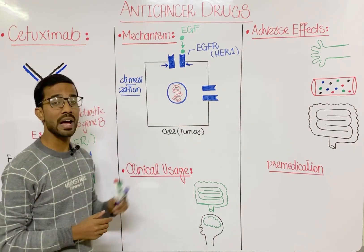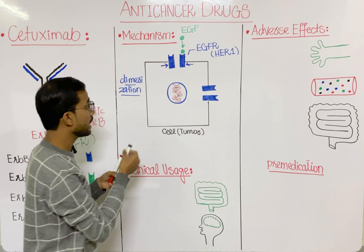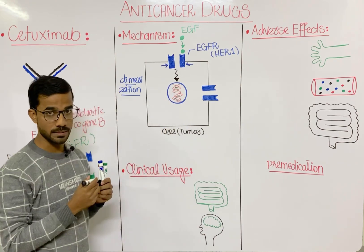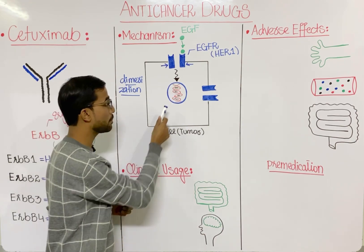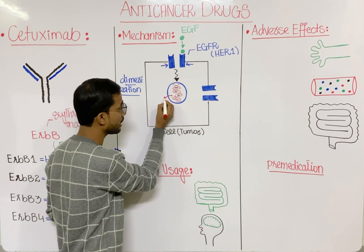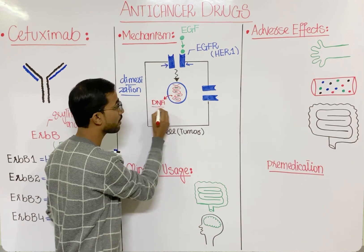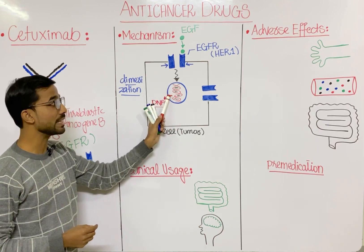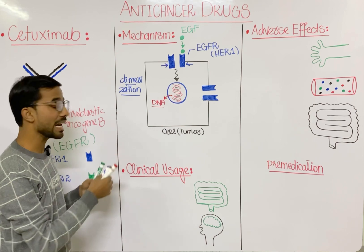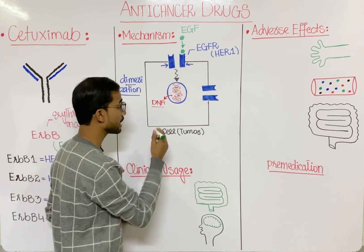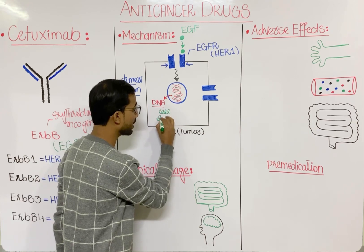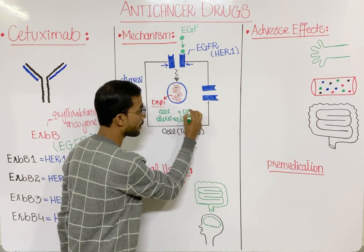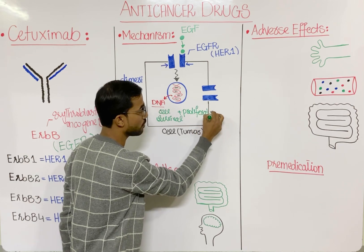After dimerization of the epidermal growth factor receptor, the signal will transduce inside the cell and reach the nucleus. Inside the nucleus we have DNA, which contains many genes. That signal activates the genes involved in cell survival and cell proliferation.